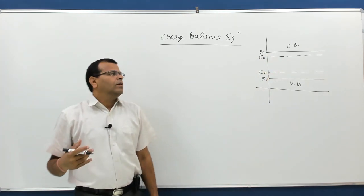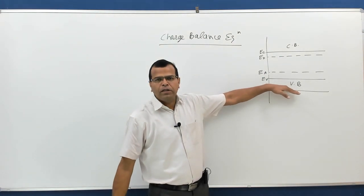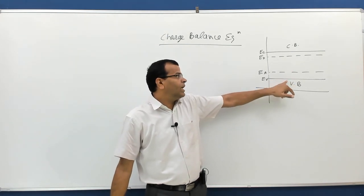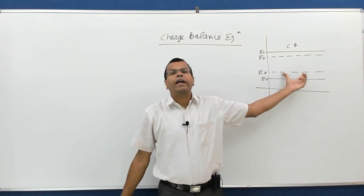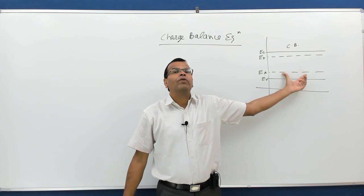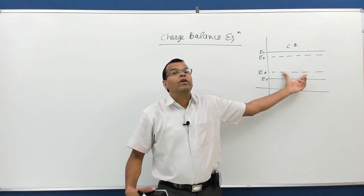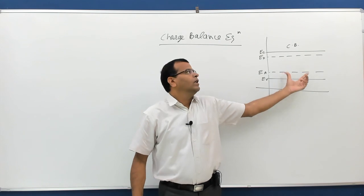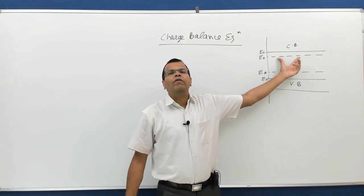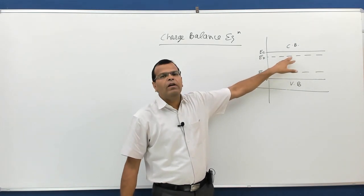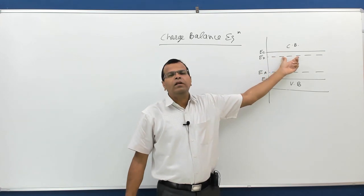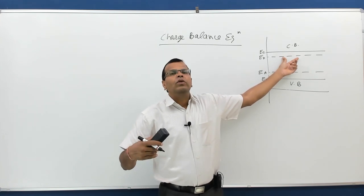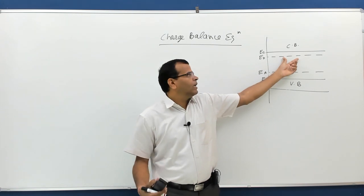At the acceptor level, when the acceptor level accepts an electron from the valence band, negative bound charges form. The acceptor impurity takes the electron and will not release it, resulting in a negative bound charge. Similarly, at the donor level, when electrons jump to the conduction band, positive bound charge remains — the donor impurity has a tendency to leave its electron and will not take it back.